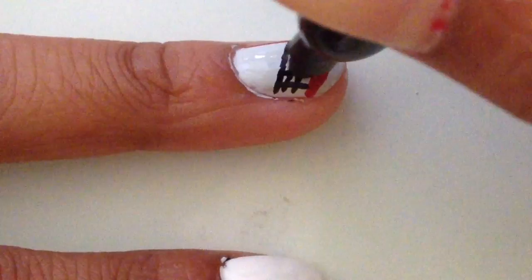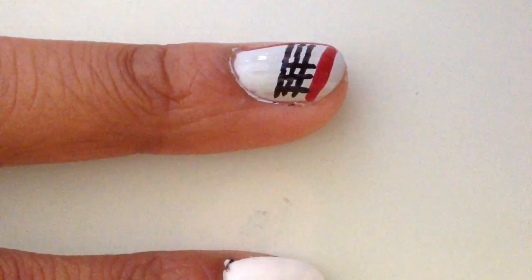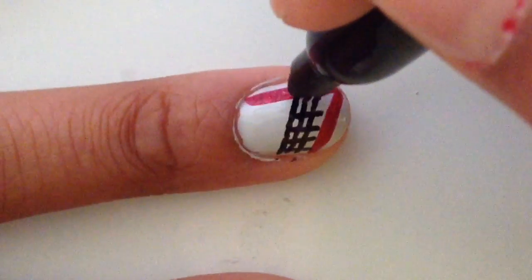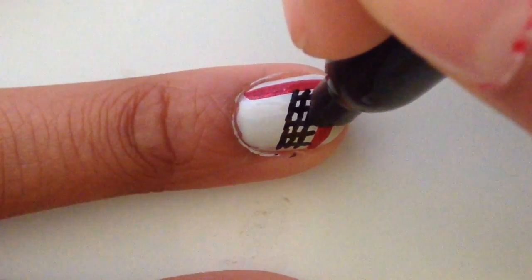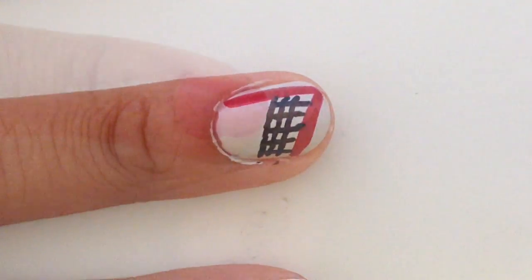And then once you're done with the horizontal lines, use a sharpie to make vertical lines along the net. And that nail is done!